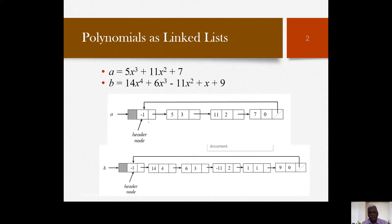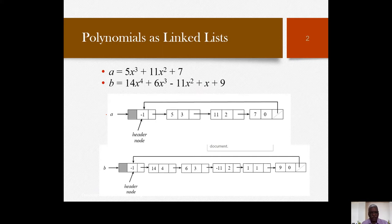The second polynomial B is also in a circular linked list with a header node, represented in the same fashion with five terms. You can see five nodes, and the last node's next field points back to the header node of B. So we have successfully represented both polynomials A and B in the form of a circular linked list.